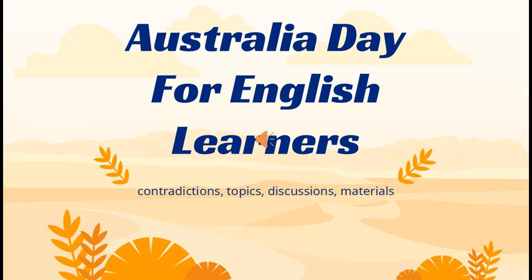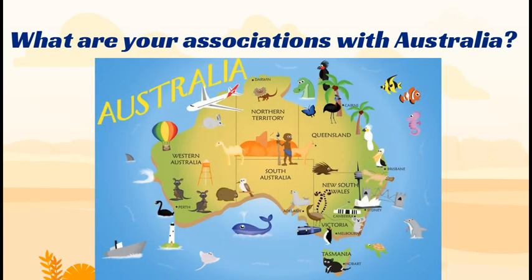So, let's get started. My first suggestion is for English teachers. It is an idea of how to start your lesson about Australia and to encourage your students to speak, even though they have very limited knowledge about Australia. You can ask them what associations they have with Australia. If you want, you can give them some visual stimuli, like this picture.